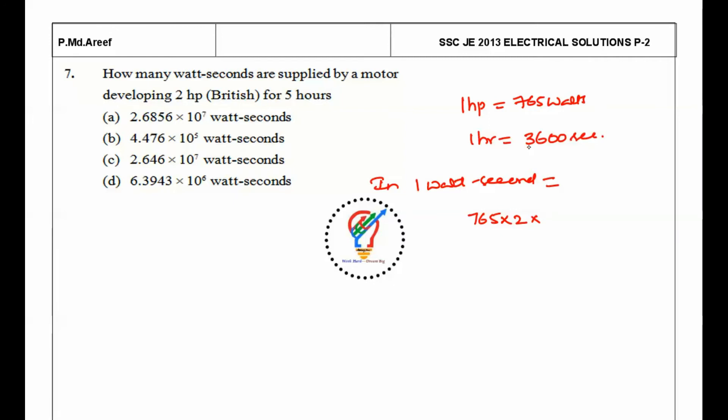One watt-second equals 765, so for 2 HP, that's 765 times 2. For 5 hours, one hour is 3600 seconds, so 5 hours is 5 times 3600. You can get it as 2.6856 times 10 to the power 7 watt-seconds. So the answer is the first one.